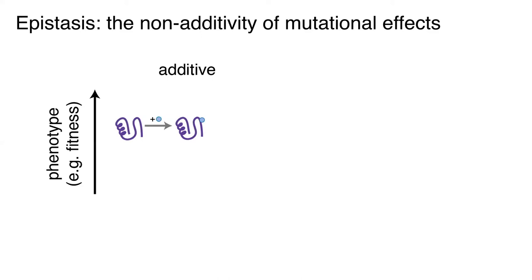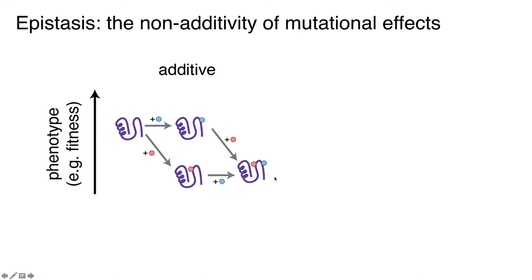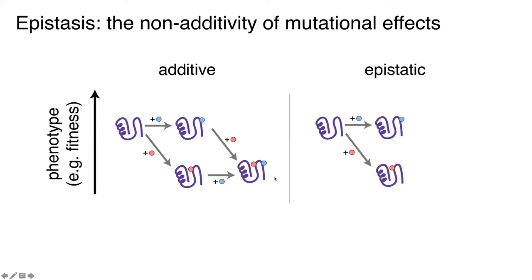Illustrating this with a double mutant cycle: a blue mutation is neutral and a red mutation is deleterious in the wild-type background. If non-epistatic, the double mutant phenotype is easily predicted from the individual mutations — the blue mutation remains neutral in the red background, forming a parallelogram structure. If epistatic, the double mutant has any other value. For example, the red mutation that was deleterious becomes neutral in the blue mutation background.